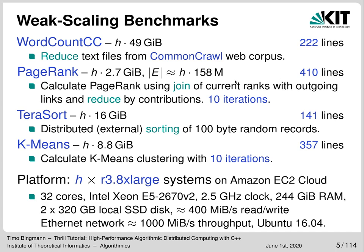PageRank is sparse matrix-vector multiplication in disguise, requiring a join-by-index of current ranks with outgoing links and performing exactly 10 iterations. TerraSort is sorting of 100-byte random records. K-Means is a simple machine learning algorithm which iteratively improves cluster points by calculating new centers — again, exactly 10 iterations. We implemented all these benchmarks in Thrill, Spark and Flink, taking great care that the implementations performed the same basic algorithmic steps. The slide also lists the number of lines of code needed to implement these benchmarks in Thrill.